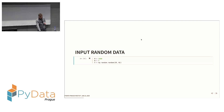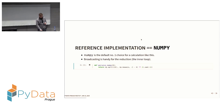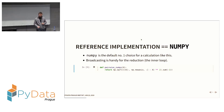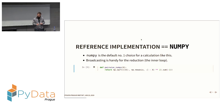I'll start with some random data as input, which I'll use throughout the presentation to demonstrate performance. NumPy would be the number one choice to do this kind of calculation in Python. The implementation uses broadcasting — NumPy can automatically extend dimensions — and we use that for the pairwise calculation and then reduce to get the result. It's a one-liner and it does the job.